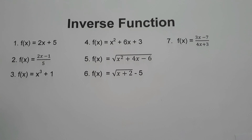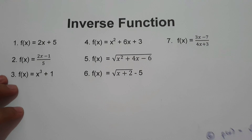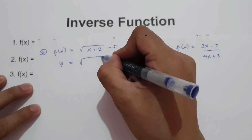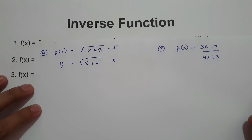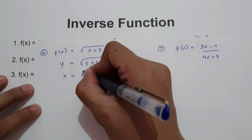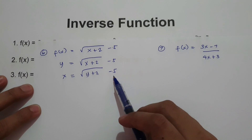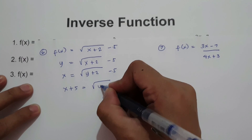What about number 6? f of x equals square root of x plus 2 minus 5. Go ahead and find the inverse of this function. The first step is to change f of x in terms of y: y equals square root of x plus 2 minus 5. Then switch x and y to find the inverse: x equals square root of y plus 2 minus 5. Move negative 5 to the side of x: x plus 5 equals square root of y plus 2.